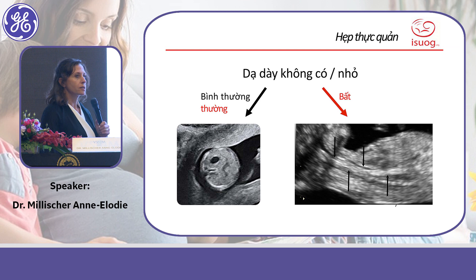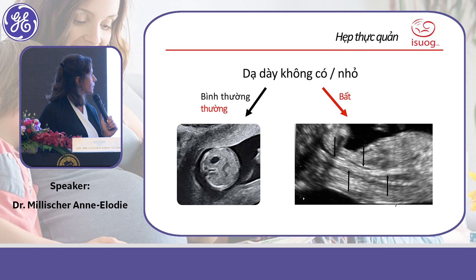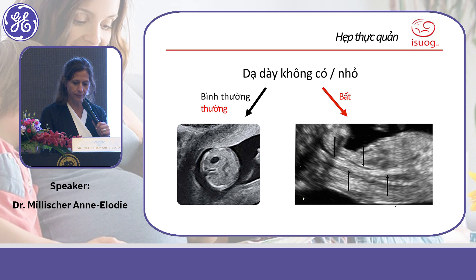When you suspect polyhydramnios with esophageal atresia, check the stomach — you can assess its appearance. Also look for a linear structure just anterior to the spine.